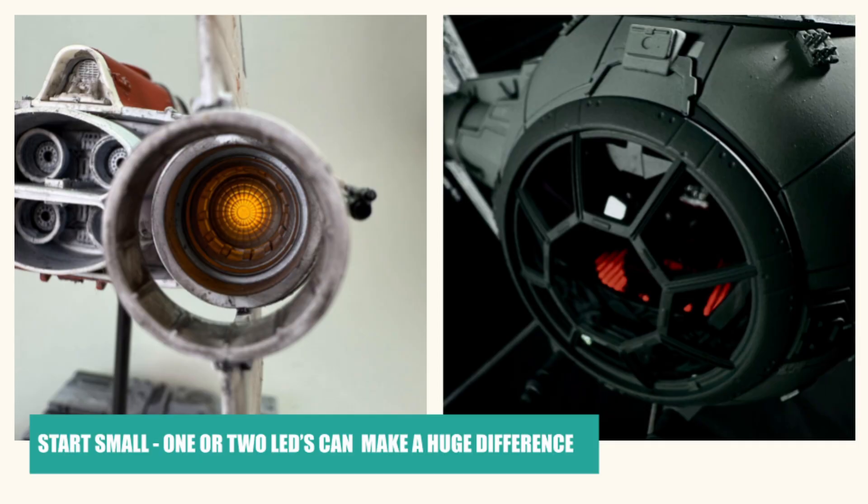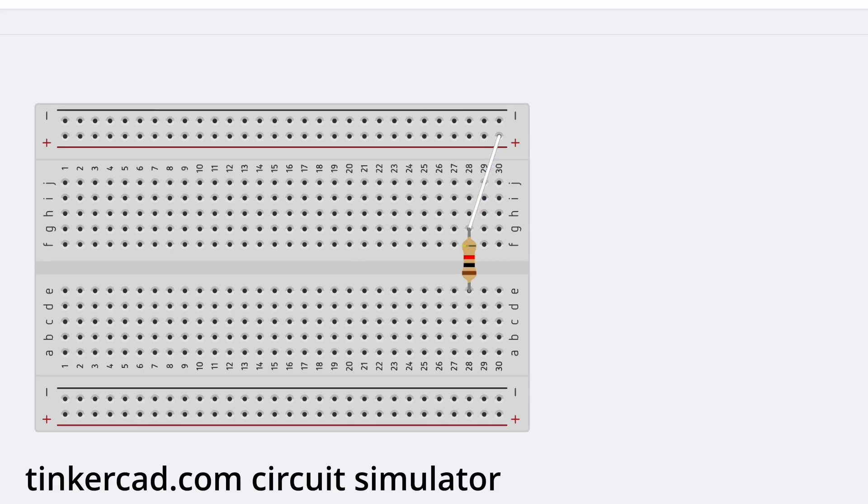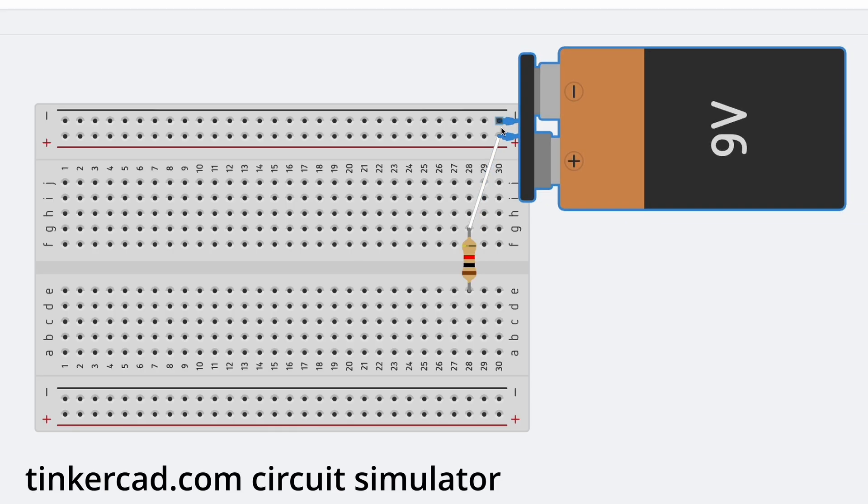So, how do you actually start? Keep it simple. Try one LED with a resistor on a breadboard. Breadboards let you test circuits without soldering, so you can experiment safely. Move things around, swap resistors, try different LED colors and placements. And don't be afraid to make mistakes. That's how you learn. Every single modeler starts here. And from here, the best thing you can do is practice.